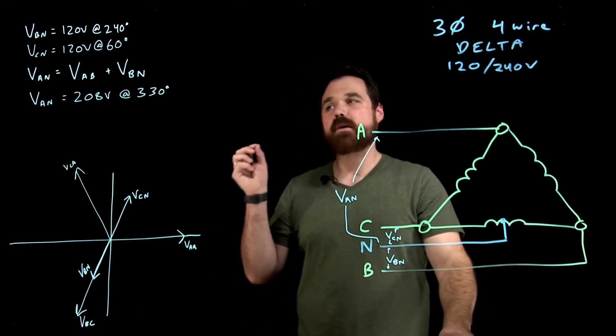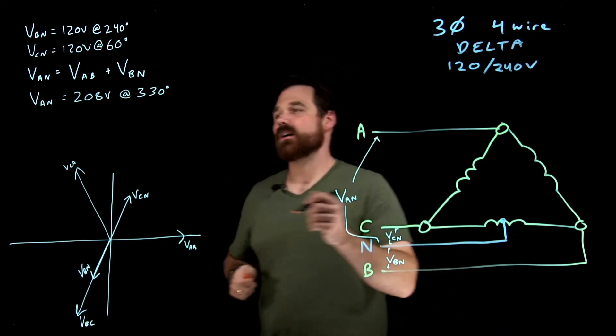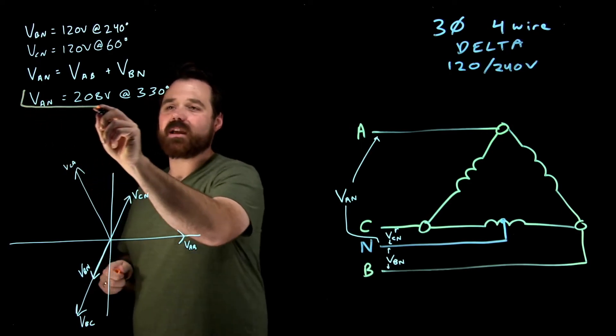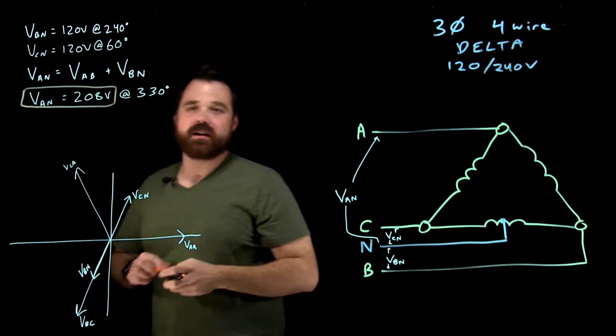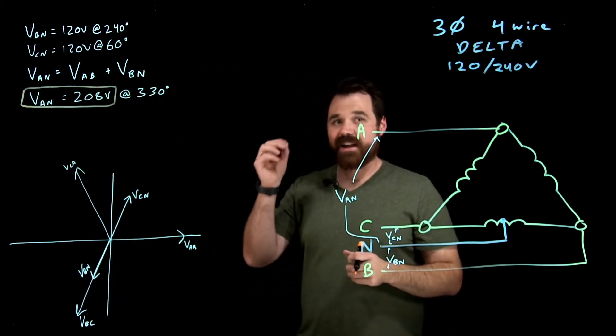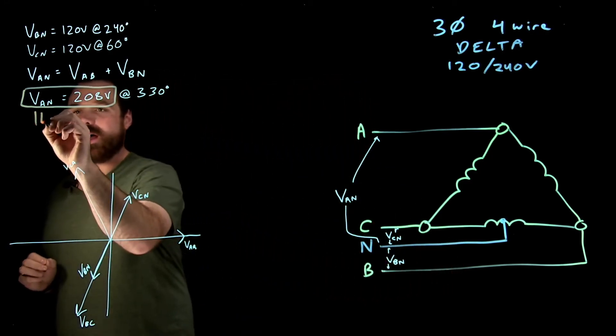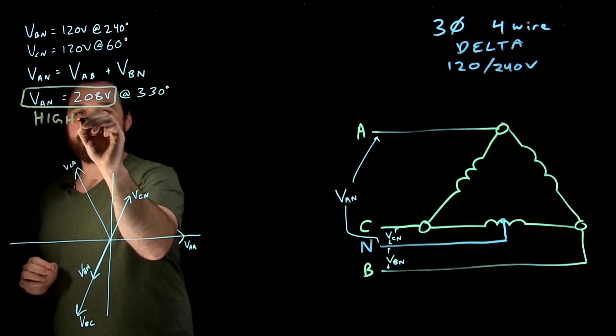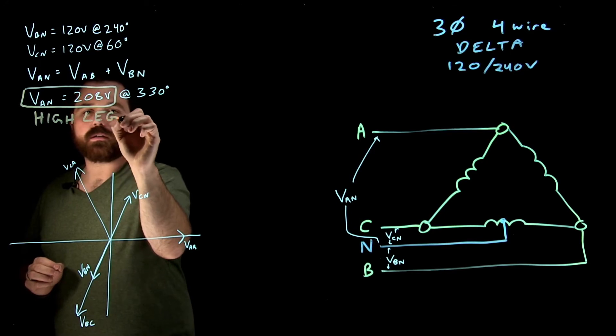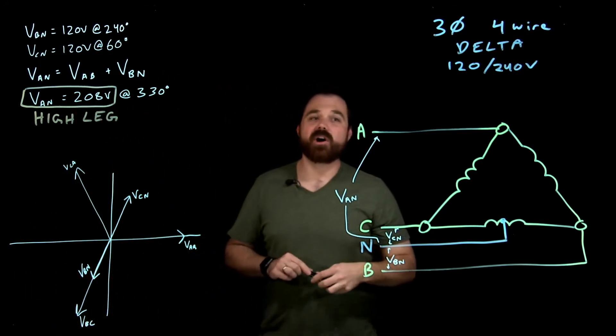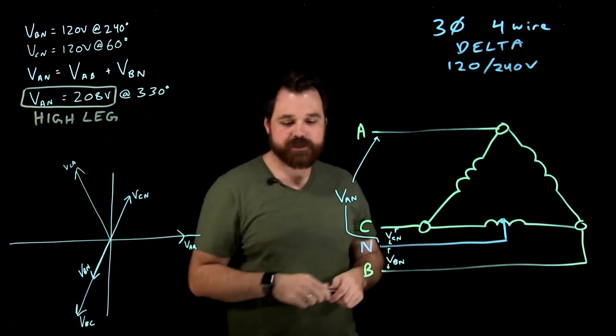Now what's important about that is the voltage itself. This VAN value right here, that is called our high leg voltage. Our high leg voltage, you cannot use it.